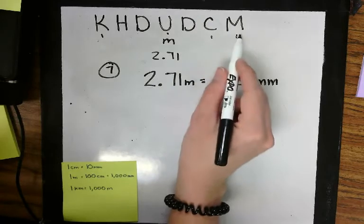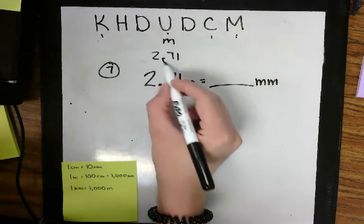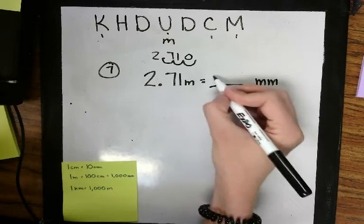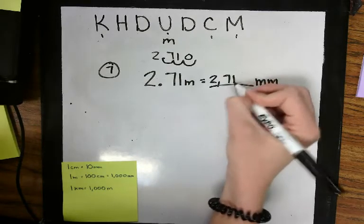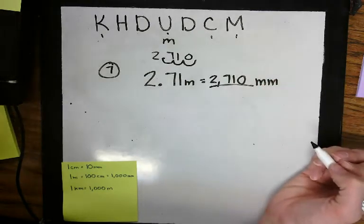2.71 meters. I'm going to move 1, 2, 3 to millimeters. 1, 2, 3. Add your zero. It's 2,710 millimeters.